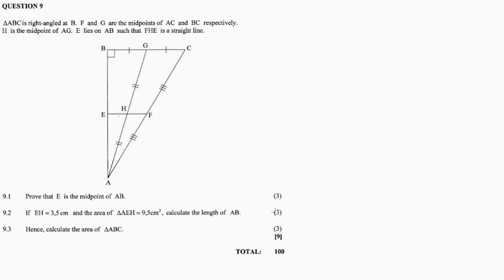Specifically involving the midpoint theorem. We have triangle ABC which is right-angled at B. So angle B equals 90 degrees. F and G are the midpoints of AC and BC respectively.